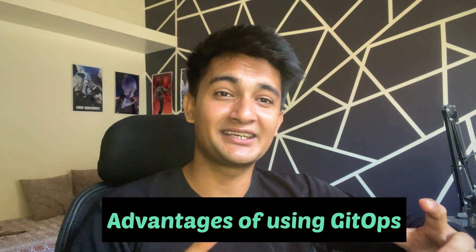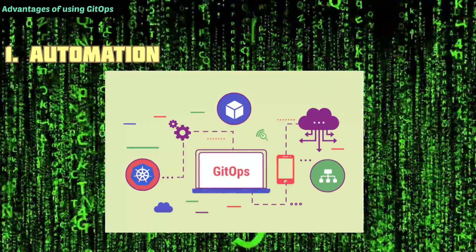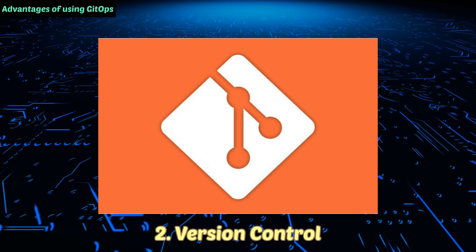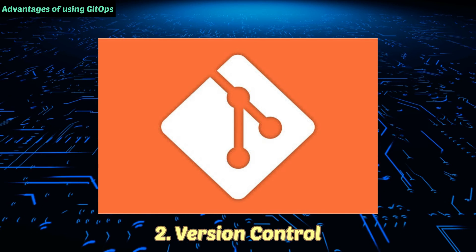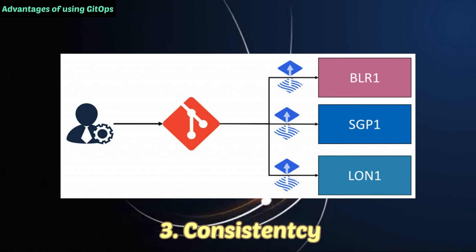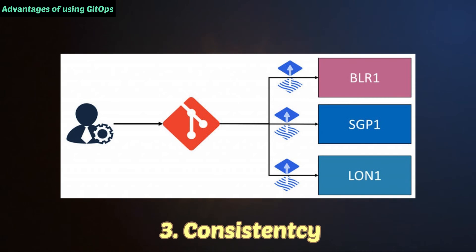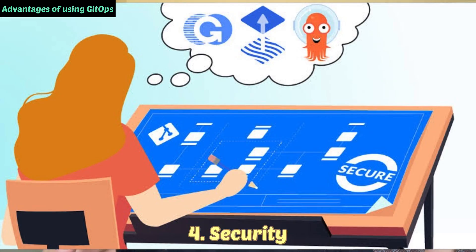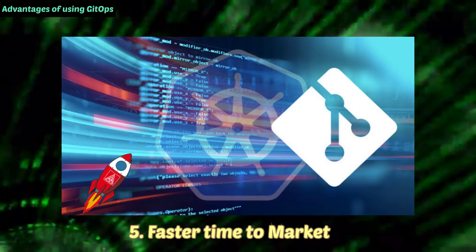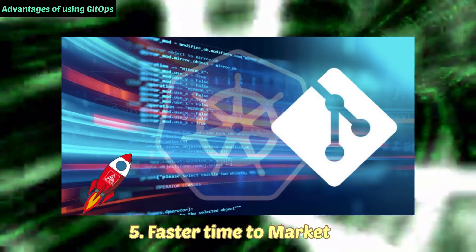Now let's look at the advantages of using GitOps. First is automation — with GitOps you can automate deployment and management of infrastructure, reducing manual intervention and minimizing human errors. Second is version control — with Git as the foundation, you have full version control and can easily track changes or roll back if issues arise. Third is consistency — all environments like staging, production, and development will share the same configuration settings, avoiding configuration drift. Fourth is security — you can control access to your Git repositories, allowing only authorized users to make changes. Finally, efficiency — you reduce deployment time by eliminating the need to manually run commands.